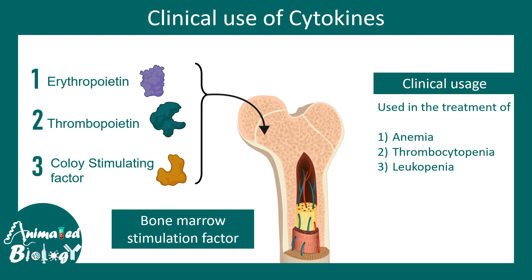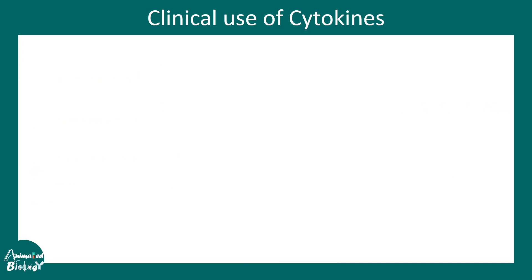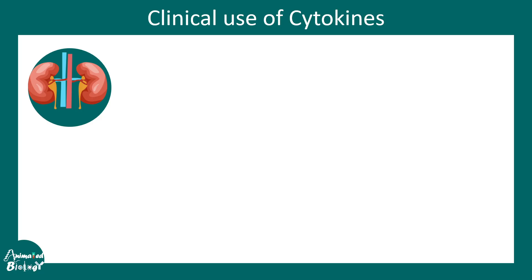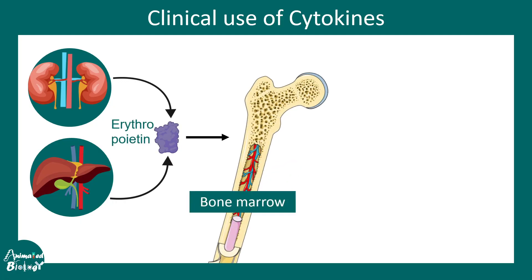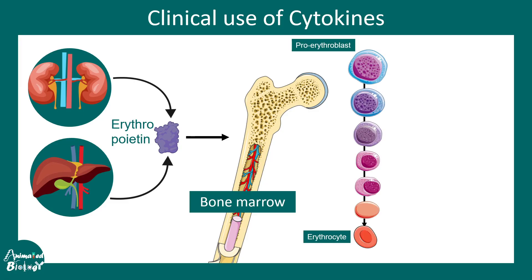Erythropoietin is normally secreted by the liver or kidney. Erythropoietin acts on the bone marrow stem cells and helps in erythropoiesis. Erythropoiesis is the process by which pro-erythroblasts get converted into erythrocytes. Obviously in this overall process, erythropoietin is a crucial factor.